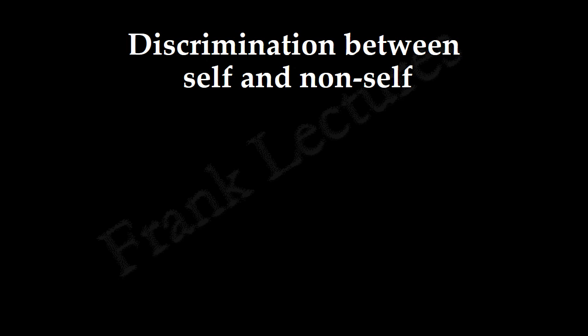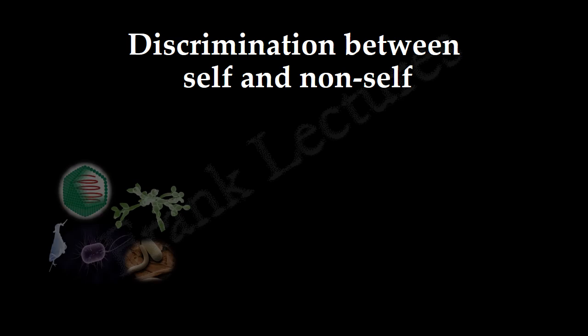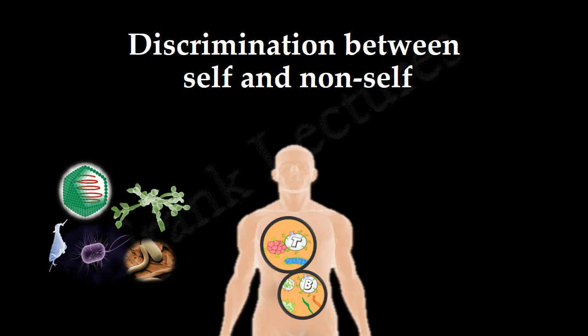The fourth characteristic is discrimination between self and non-self. We have seen that the adaptive immune system has specificity and diversity — it can recognize and respond to enormous and different types of microbes. At the same time, adaptive immunity does not react against self antigens. The host's own cells and molecules are known as self, and foreign substances are known as non-self.